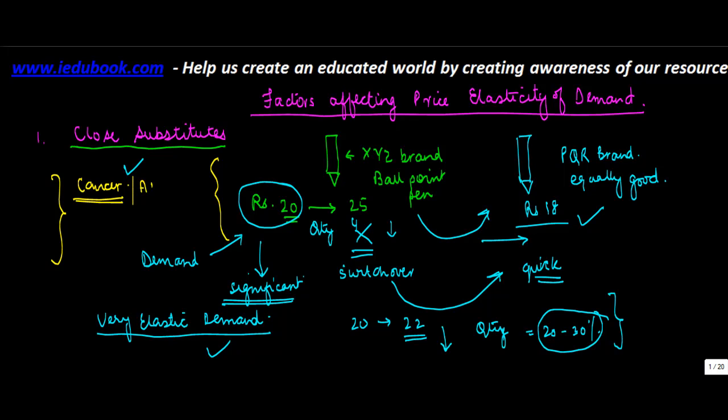Now there are certain medicines which are used for the purpose of these diseases. Now even if the price of this medicine increases from 100 to let's say 150, people are still going to buy it. Why? Because these medicines which are prescribed for these diseases do not have a close substitute.